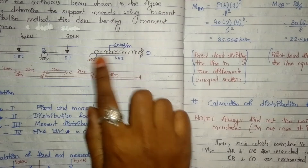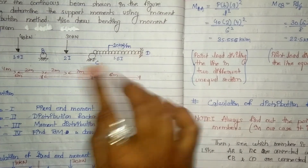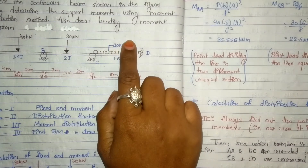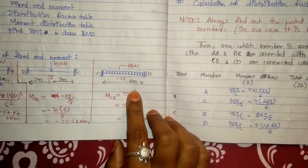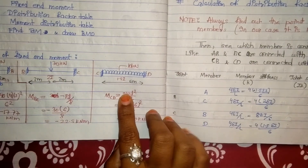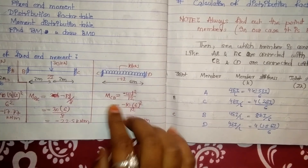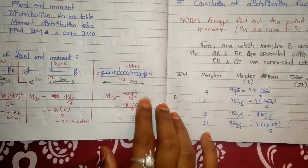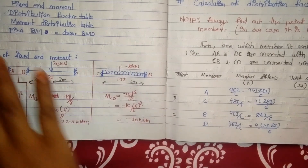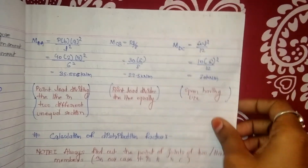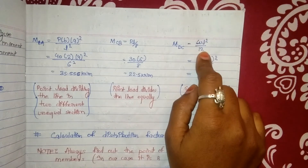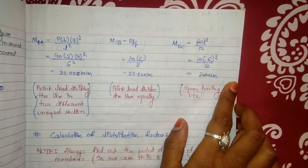For section CD, there is no point load — only a UDL of 10 kN/m. So the formula becomes wL²/12, and since we are going from C to D (left to right), it is negative: Mcd = −30 kN·m. For Mdc, moving from right to left, it is positive: Mdc = +30 kN·m.